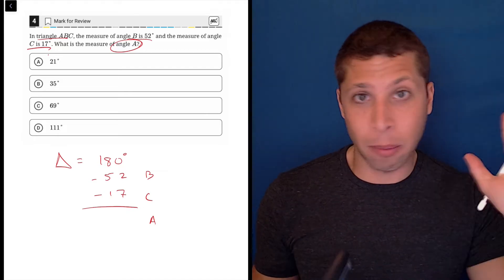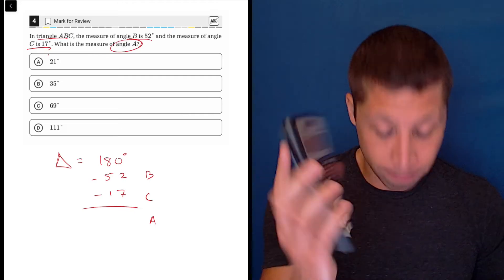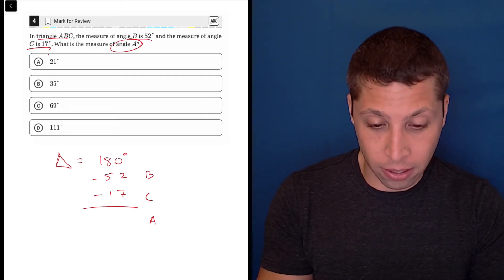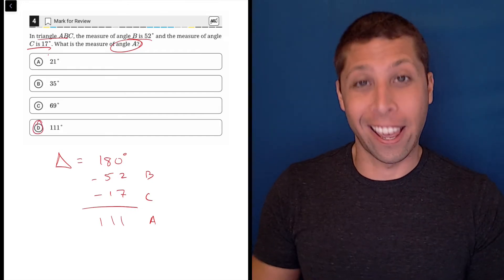So here's a case where I wouldn't use the Desmos calculator. I find it very complicated. I would use the very simple calculator and just do 180 minus 52 minus 17, and that is 111, and that is choice D, and that is the answer.